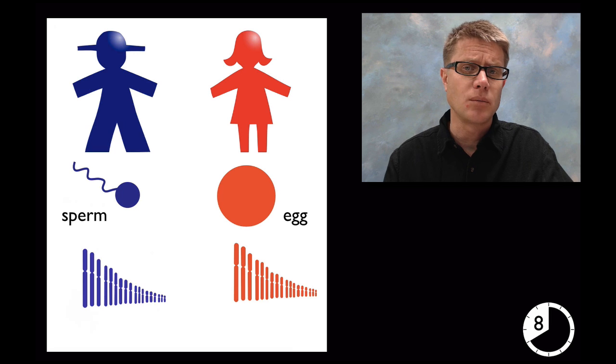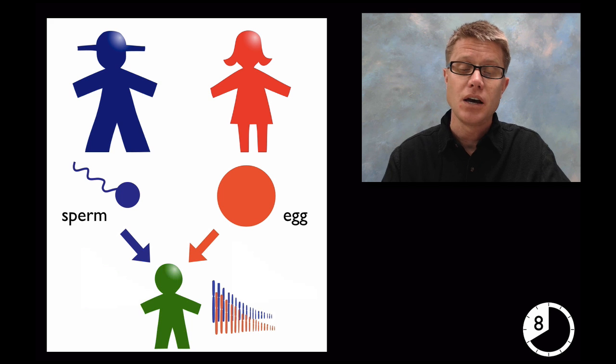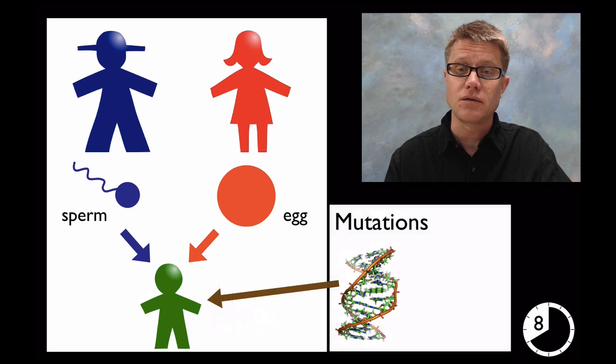As you move into middle school you want to get more specific. Males are giving sperm, females are giving eggs. What they're giving is half of their chromosomes. They're giving you 23 chromosomes from dad, 23 from mom, and those together create the 46 chromosomes that make you. Sexual reproduction is going to create variation in each of the offspring. What else can affect variation?